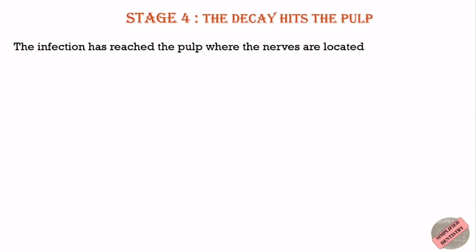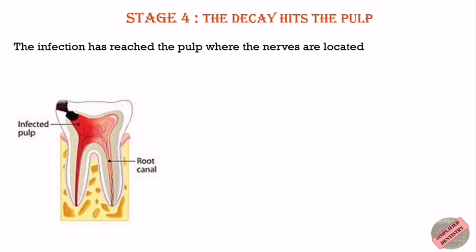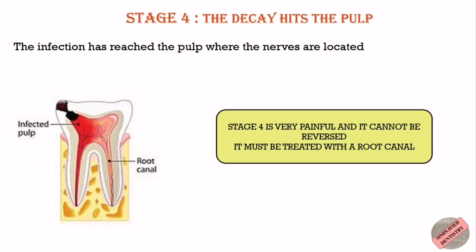Stage 4 is when the decay hits the pulp. The infection has now reached the pulp where the nerves are located. This is very painful. Unfortunately, a root canal is the only treatment option unless the tooth is extracted. So of course, stage 4 also cannot be reversed.